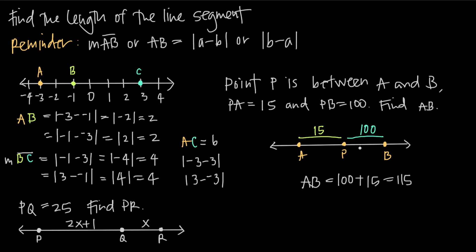Keep in mind that with problems like these, sometimes you'll be given part of the line segment, like the distance between A and P, and you'll be given the total distance from A to B, and then asked to find the unknown distance between P and B. If that's the case, you want to just take the total distance of A to B and subtract the piece of it — the distance between A and P — and that'll leave you with the distance between P and B. The general idea is the segment addition postulate: the length of part of the segment plus the length of the other part equals the total length. So we know AB here is 115.